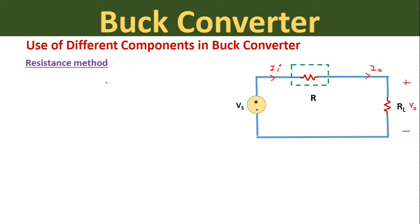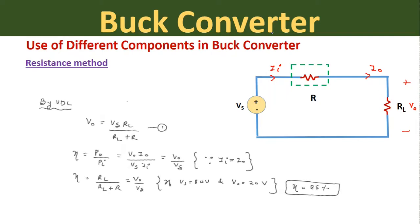Next, let us look at the use of different components in the buck converter. In this simple circuit diagram, we are connecting one resistance R and taking the load resistance to be RL. Using the circuit we can find the output voltage using the voltage divider rule: V0 equals Vs multiplied by RL divided by (RL plus R), which is the total resistance of the circuit. This method is called the resistance method.